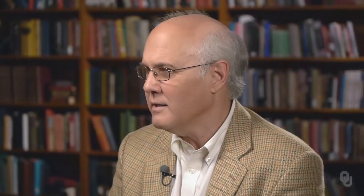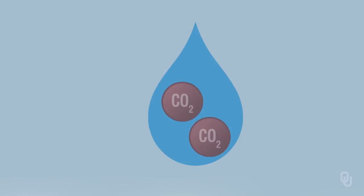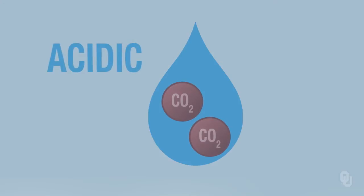You may not know this, but water is an acid — it's a weak acid, but it's still an acid. It has a pH of 5.7. Why? Because as the rain falls, it absorbs CO2 in the atmosphere, and that makes the water slightly acidic. This weak acid causes rocks and minerals to break apart.